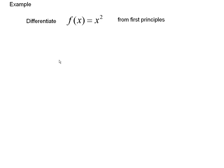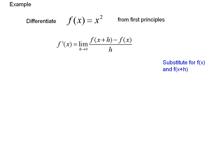The first one is f of x equals x squared. I'll go pretty quickly, but you can always pause and replay different things. Here's our definition of a derivative, a general formula. We're going to take our function and substitute in for f of x and f of x plus h. f of x is just x squared, and f of x plus h is x plus h squared.